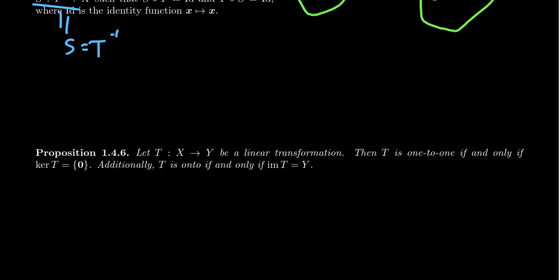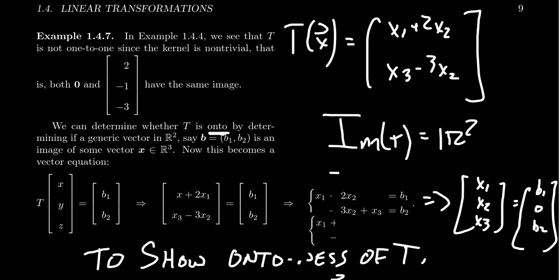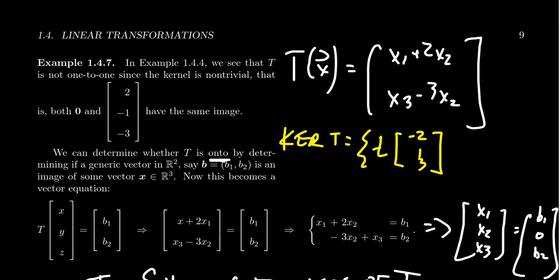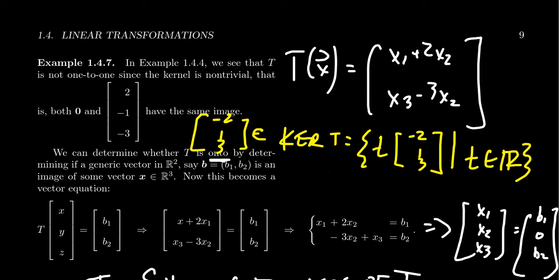Clearly a map will be onto if and only if its image equals the codomain. Coming back to this example, we computed the kernel and showed that the kernel of this transformation was equal to the set of vectors of the form t·(-2, 1, 3) where t is an arbitrary real number. This is much bigger than just the zero vector — the vector (-2, 1, 3) itself is in there — so this is not just the zero vector, which tells us it is not one-to-one. So we've shown that this function was not one-to-one because the kernel was too big, and it was onto because the image was everything. This is not bijective, but it is a surjective map.